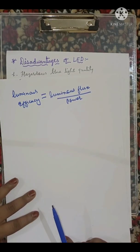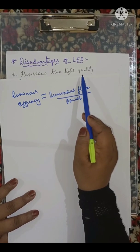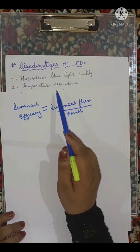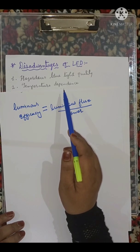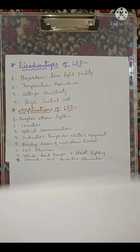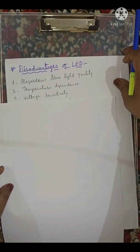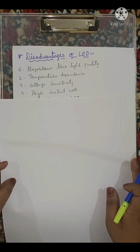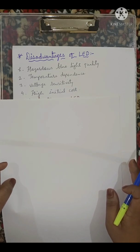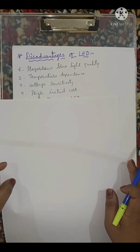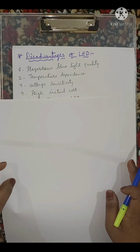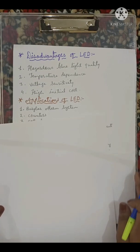First disadvantage is hazardous blue light quality. Second disadvantage is temperature dependence - as you know, all semiconductors are temperature dependent. Third: voltage sensitivity. Fourth disadvantage is high initial cost. In board exam, the question will be like: write disadvantages of LED or write any two disadvantages of LED.